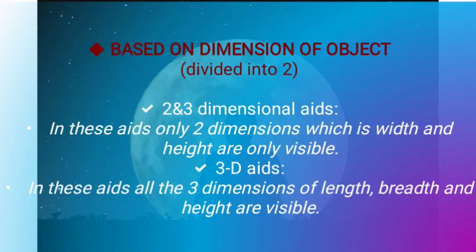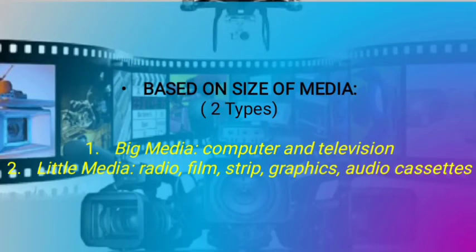Let's proceed to the classification based on size of media. There are two types: first, big media — computer and television; and second, little media — which includes radio, film strip, graphics, and audio cassettes.